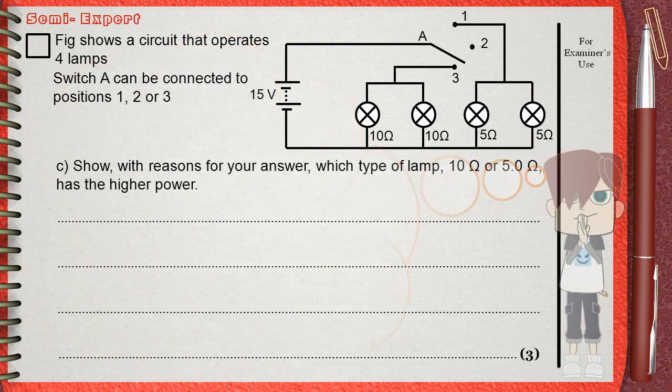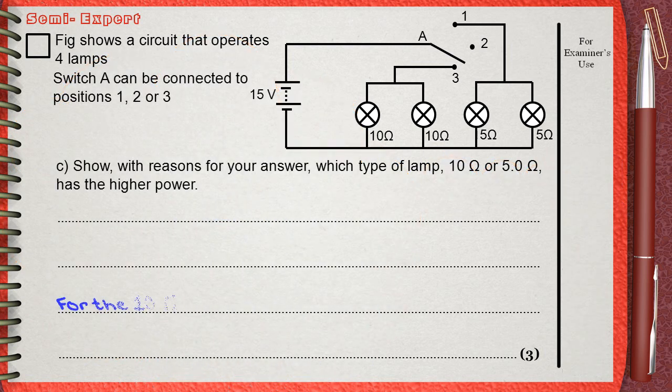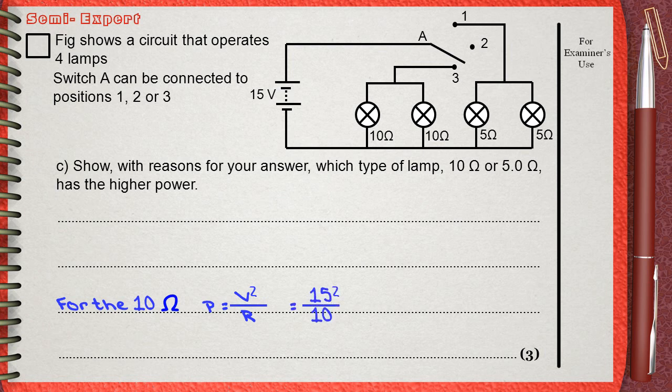So let's find out which one has the higher power. Power for the 10 ohms: P equals V square over R, which is 15 square divided by 10, the resistance.